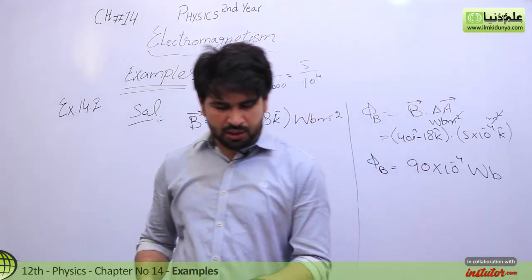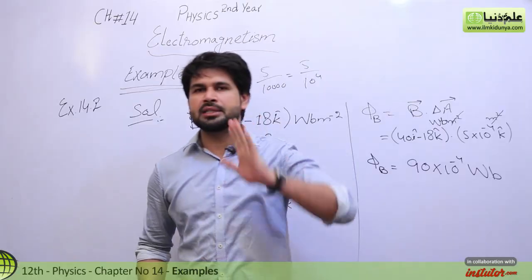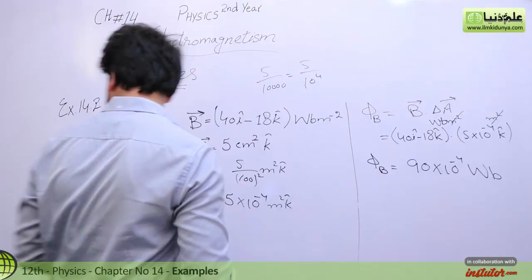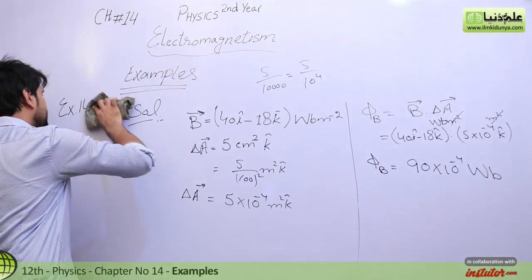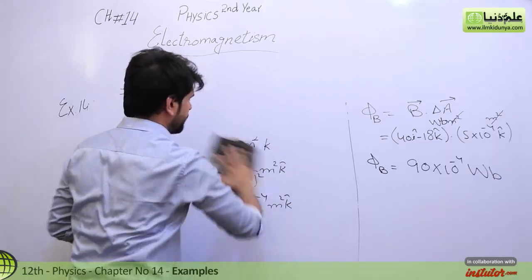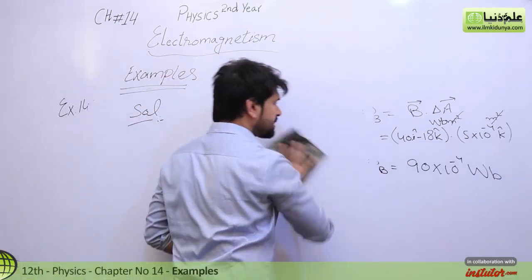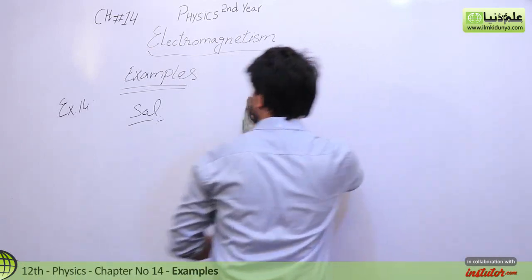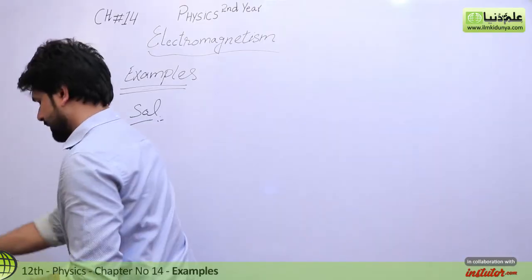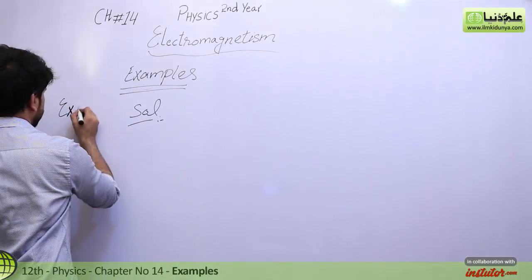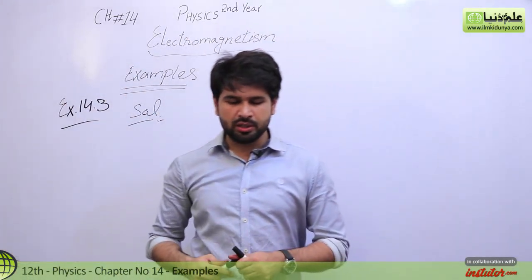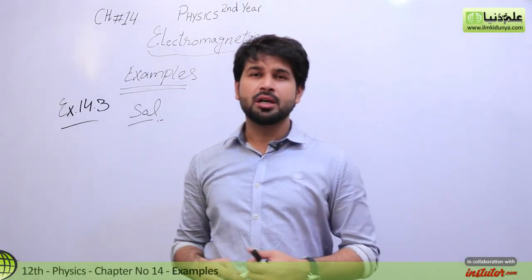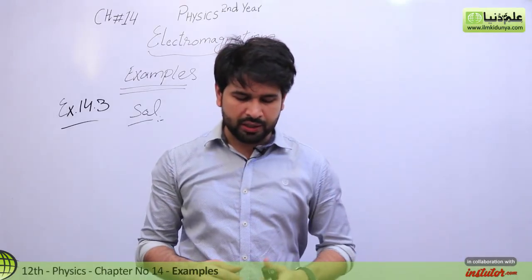Next we move to the third numerical example, 14.3. The statement of numerical example 14.3 is: a solenoid 15.0 cm long has 300 turns of wire. A current of 5.0 ampere flows through it.